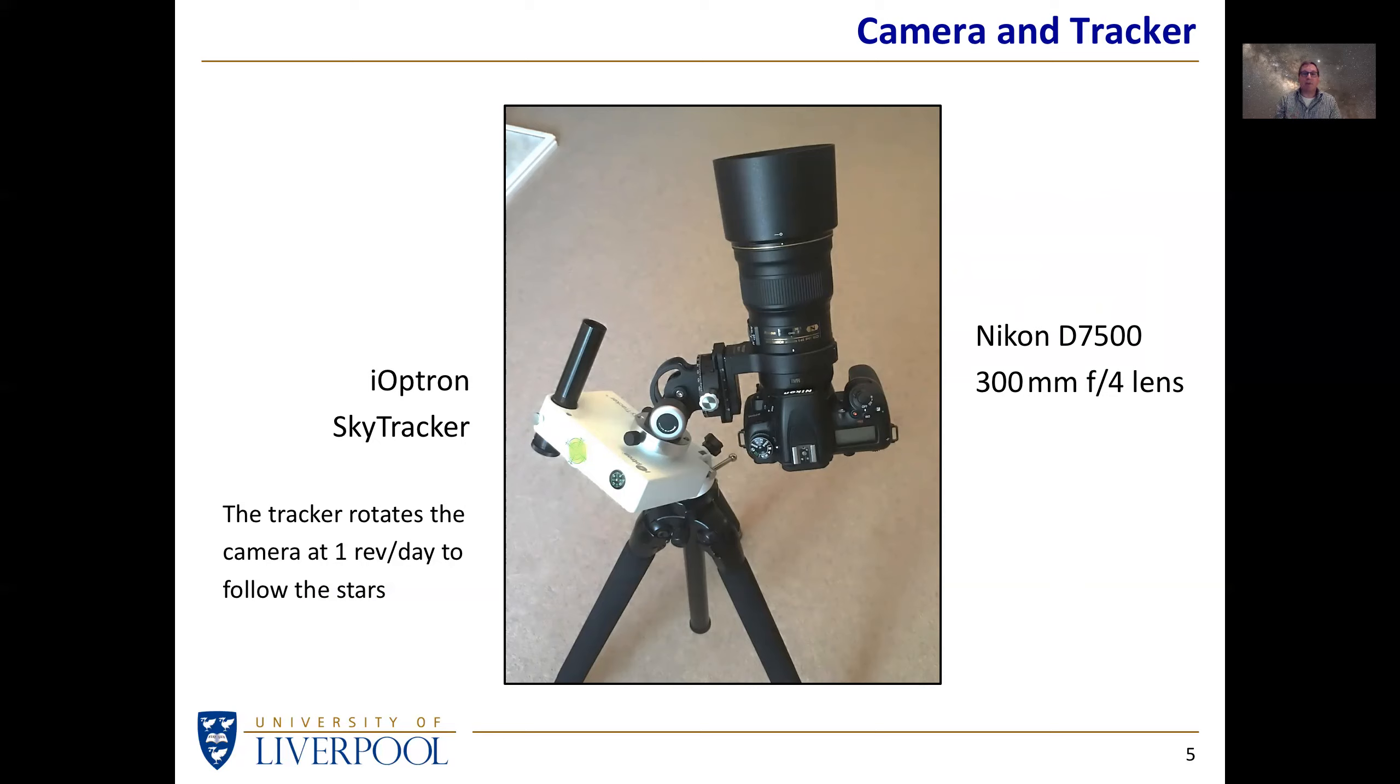The camera and lens are mounted on a sky tracker, an iOptron sky tracker. This is a commercial star tracker designed to rotate the camera at one revolution per day, one revolution every sidereal day. To make sure it's lined up correctly with the earth, there's a polar scope here to make sure that the tracker is lined up with the earth's axis. The camera is mounted on a very small ALT-AZ mount onto the tracker.